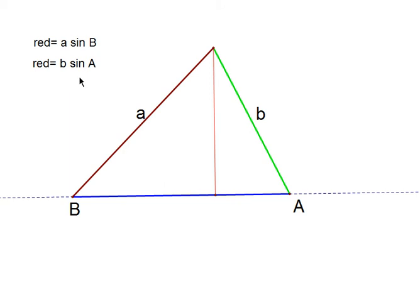Now if they're both equal, red hasn't changed at all. So a sine B must equal b sine A. And we can rearrange that to make the sine rule, which is a over sine A equals b over sine B.